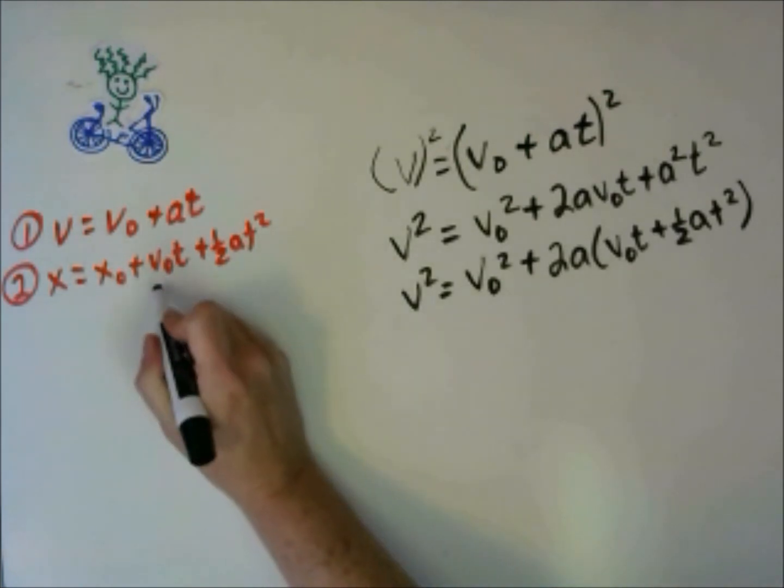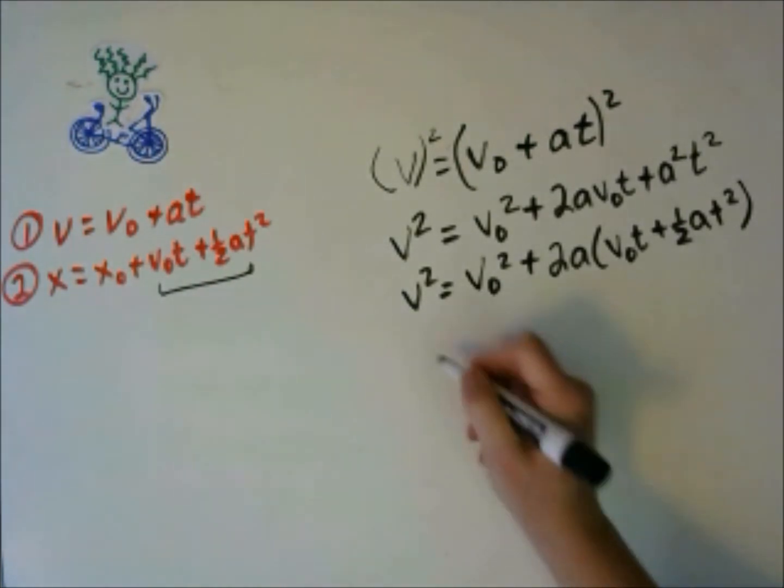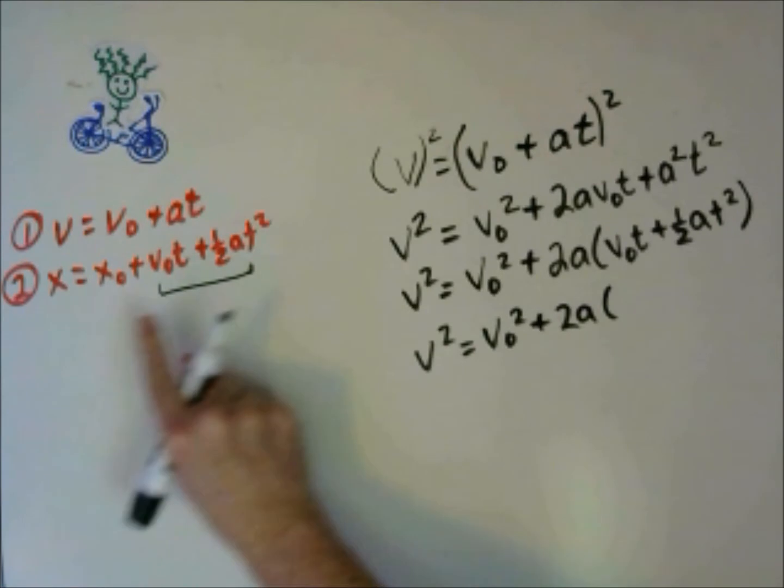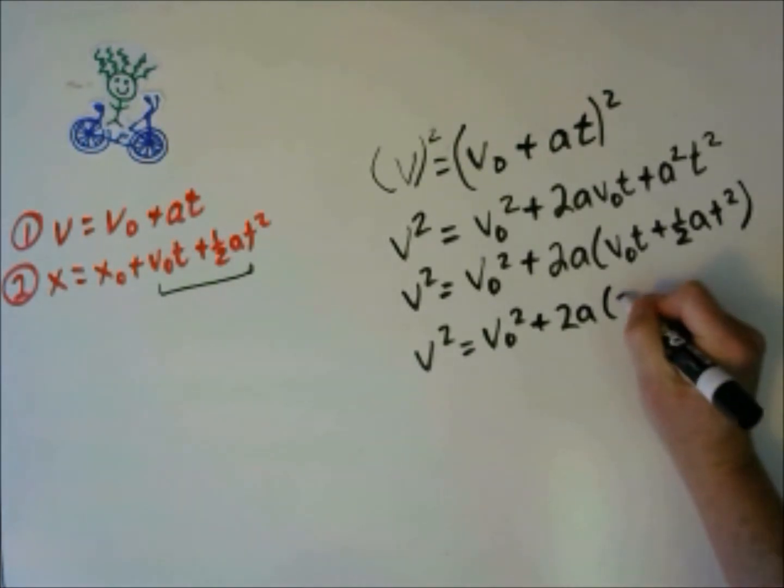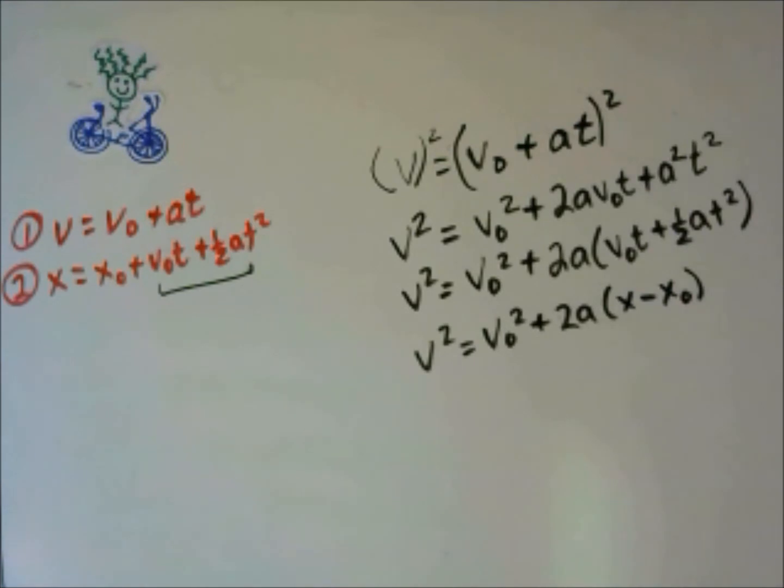And you can see that what's in here is the same as this, right here. And this is the same as x minus x0. This is our third kinematics equation.